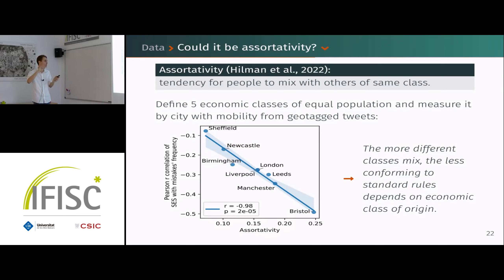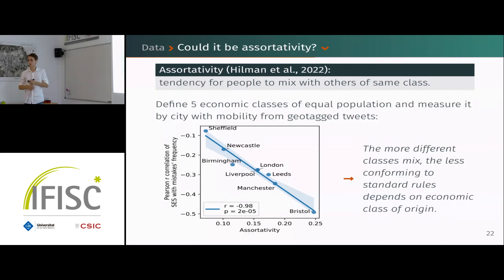On the x-axis we have the assortativity for each of eight cities, and on the y-axis the correlation between socioeconomic status and frequency of deviations. Remarkably, the more different classes mix with one another, the less conforming to standard rules depends on class of origin. For example, in Bristol, assortativity is high, so people don't mix much, and grammar mistake frequency depends a lot on socioeconomic status.